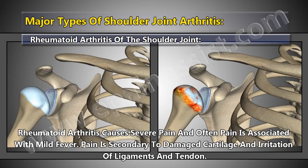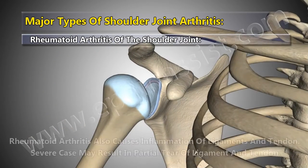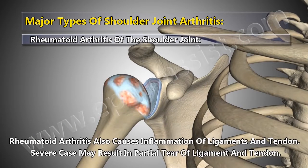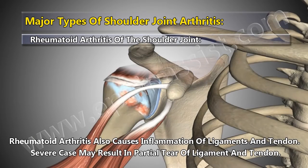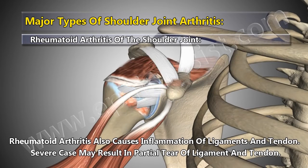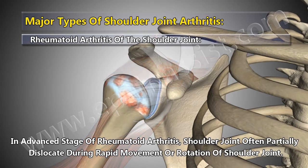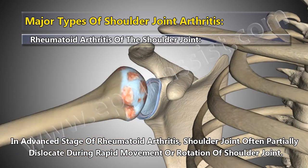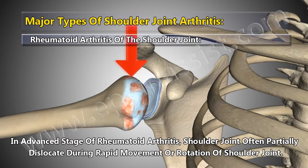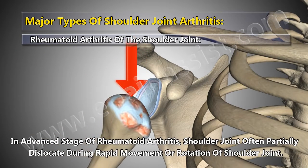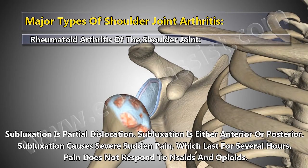Pain is secondary to damaged cartilage and irritation of ligaments and tendons. Rheumatoid arthritis also causes inflammation of ligaments and tendons, and severe cases may result in partial tears. In the advanced stage, the shoulder joint often partially dislocates during rapid movement or rotation. Subluxation, or partial dislocation, is either anterior or posterior.